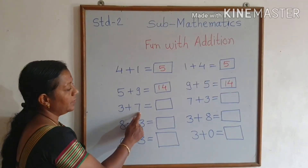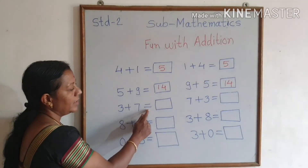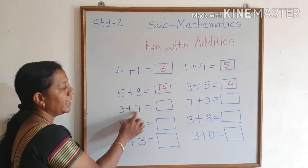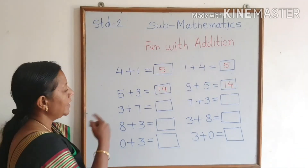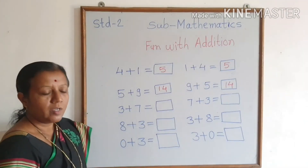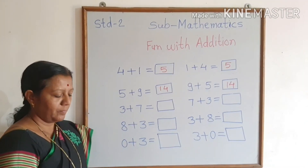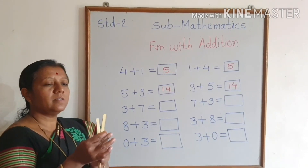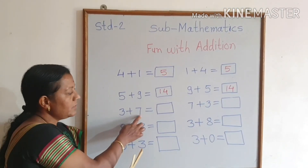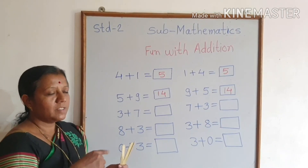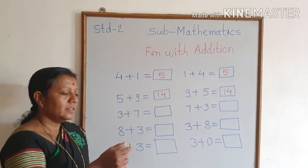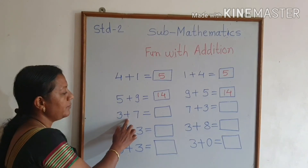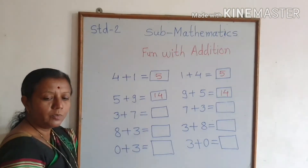Now, 3 plus 7 — let's do the addition. Which is the bigger number? 7. Hold 7 in your mind. How many sticks do we need to add? 3. Take 3 sticks. How many sticks are there? 3. Now count forward from 7: 8, 9, 10. So 3 plus 7 is equal to 10.